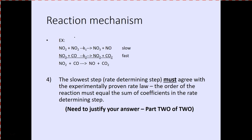When looking at mechanisms and breaking them down into elementary steps, the stoichiometry of those elementary steps can give us potential rate laws. The slowest elementary step should match the overall rate law that was determined experimentally.